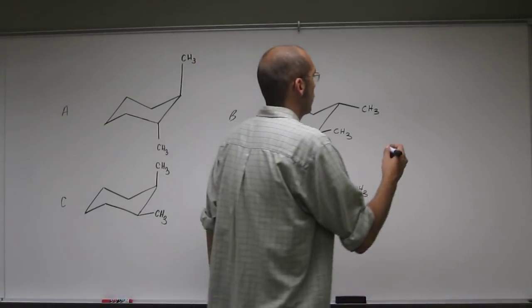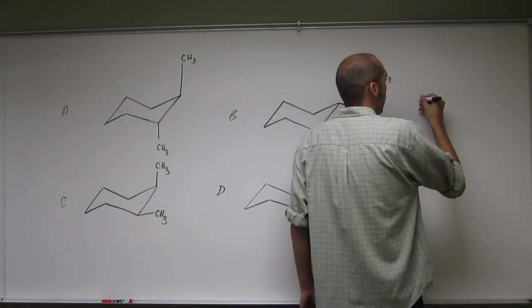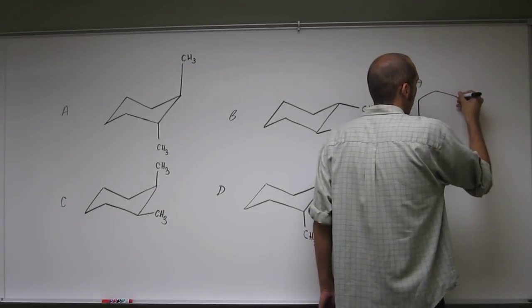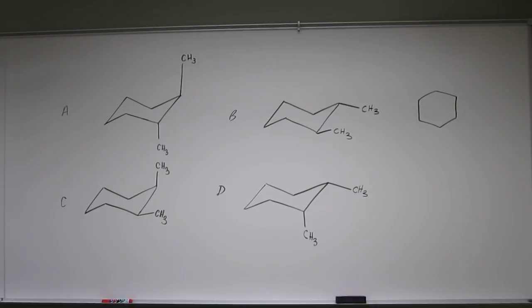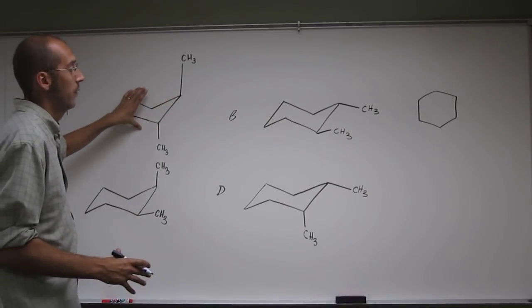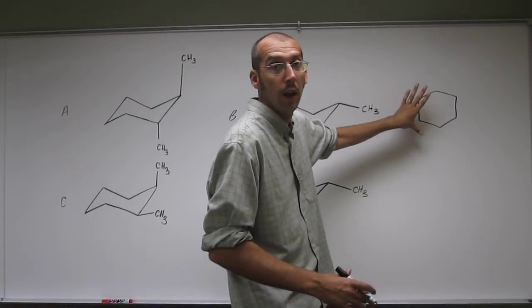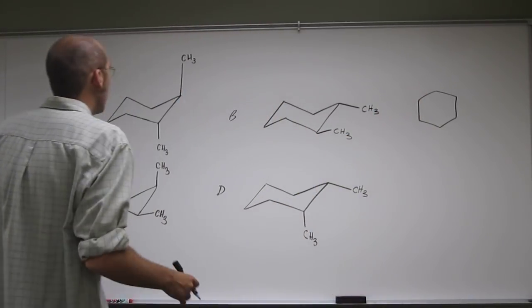Let's go ahead and draw the bond line form of cyclohexane. In fact, I think this is the easiest way to go about doing this is that you just depict this form on a bond line form because it's easier to see.